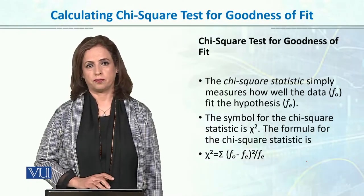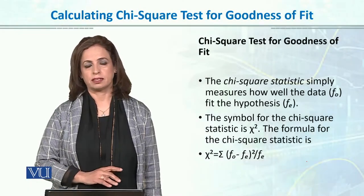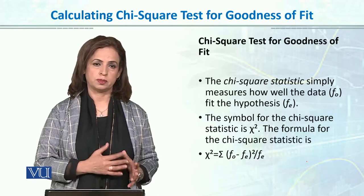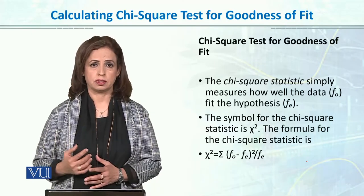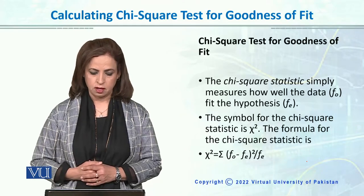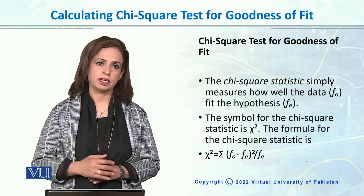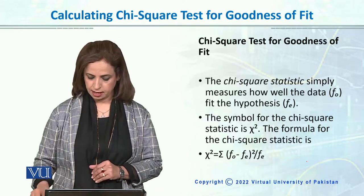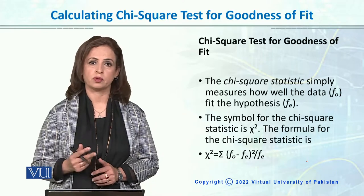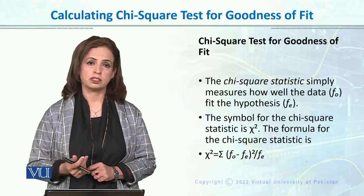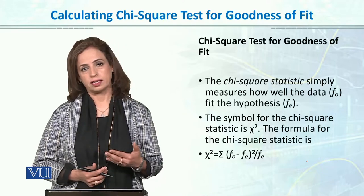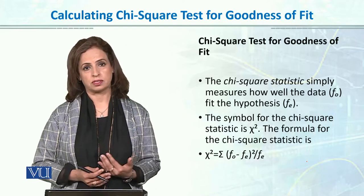Chi-square goodness of fit simply measures how well the observed data fit to the expected data that is stated in the null hypothesis. We will manually calculate chi-square so that we can also do it in SPSS with one click. But it's important to understand what chi-square is and how we take the expected or observed frequencies.